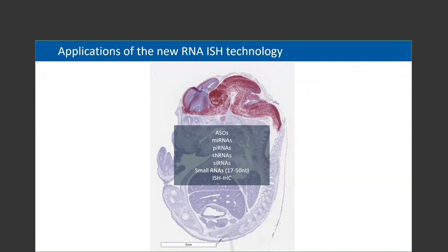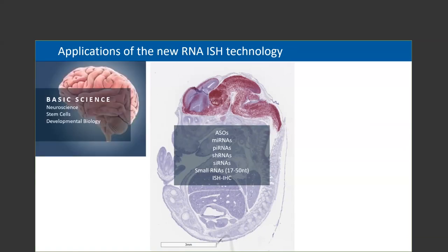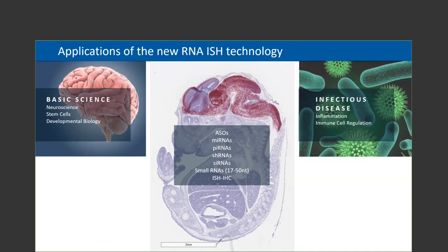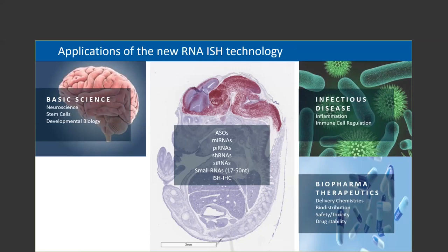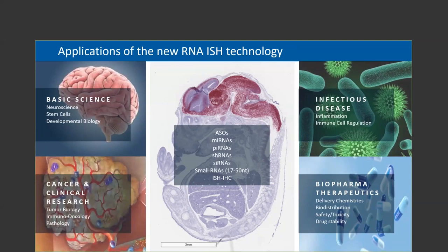The major research segments for this new assay include basic science with applications in neuroscience, stem cells, and developmental biology. The next major research area is infectious diseases, in the study of inflammation and immune cell regulation. Following that, biopharma therapeutics is an important segment studying delivery chemistry, biodistribution, safety and toxicity, and drug stability. Last but not least, the new assay will support the study of cancer and clinical research around tumor biology, immuno-oncology, and pathology. Overall, these applications require a highly sensitive and specific solution to study small RNA expression.